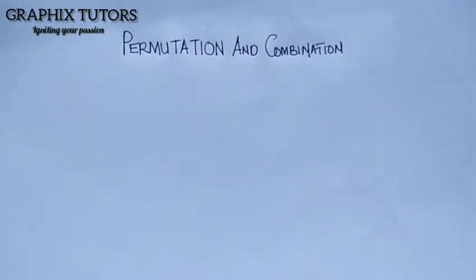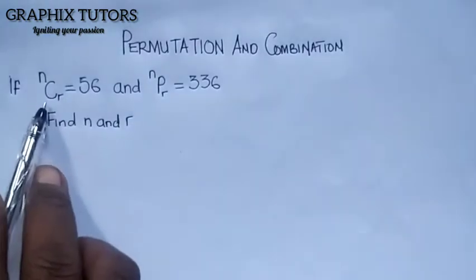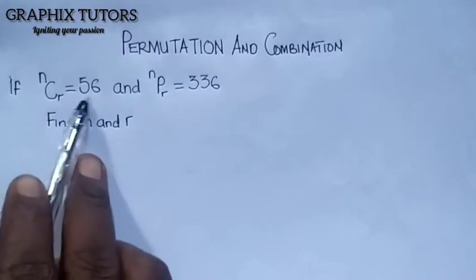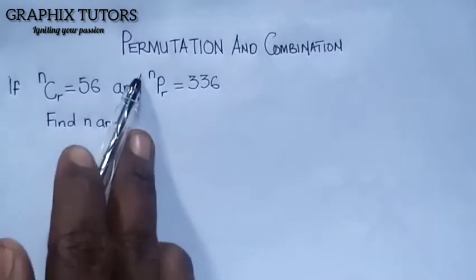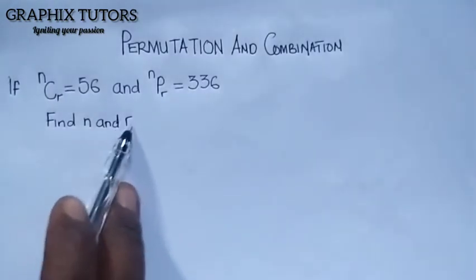Hello once again, my name is Rafik. Today we want to look at an aspect of mathematics which is permutation and combination. We will be analysing a series of problems involving this topic. The first example is this: if n combination R is equal to 56 and n permutation R is equal to 336, find n and R.